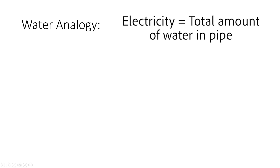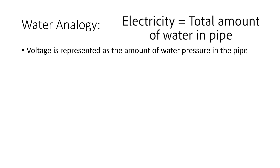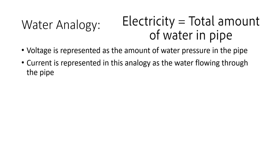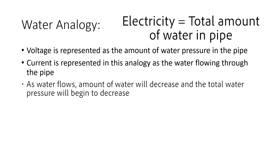To recap: electrical charge is represented in this analogy by the total amount of water in the pipe, and voltage is represented by the water pressure in the pipe. As water flows — which is represented by electrical current — the amount of water will decrease and the total water pressure will also begin to decrease. With that said, current is affected by the amount of pressure being applied in the pipe, or the amount of voltage in a circuit. Now let's look at a scenario where there are two different pipes with the same amount of water and the same water pressure, but one pipe is larger in diameter than the other.